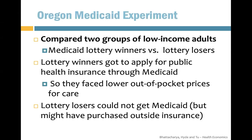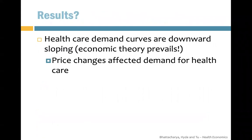The Oregon Medicaid Experiment focuses on groups of low-income adults. They were given a lottery, and winners were randomly selected and got to apply for public health insurance through Medicaid, which is cheaper. For those who did not win, they can't get Medicaid but can get coverage elsewhere.